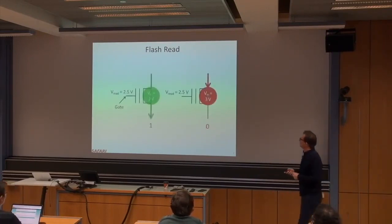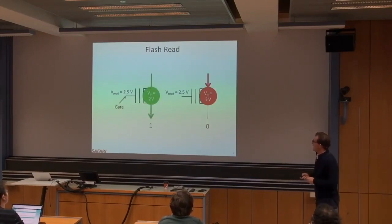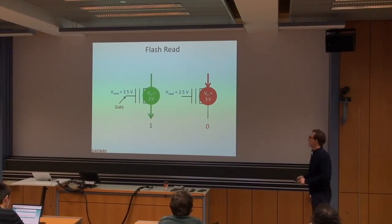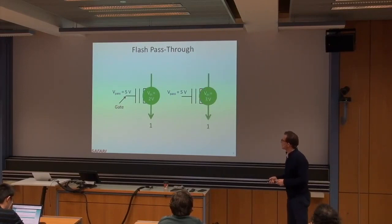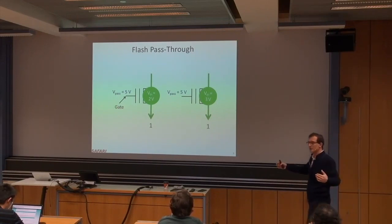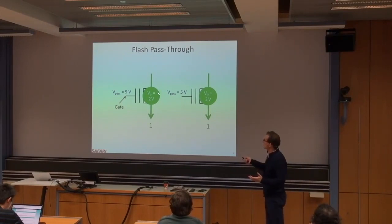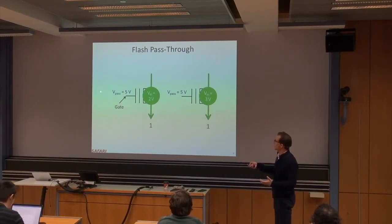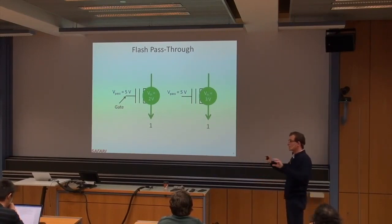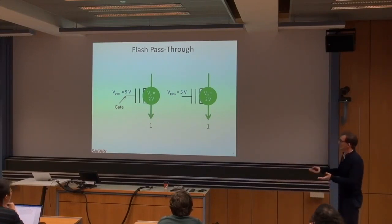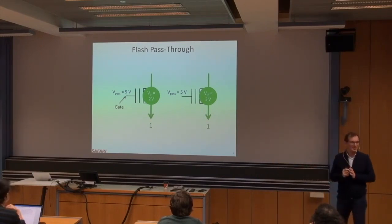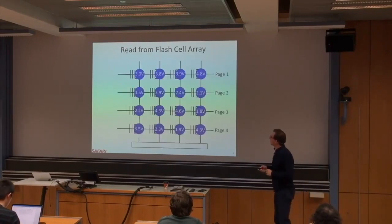For pass-through: if you don't want to read a row, you apply a very high voltage — higher than any programmed value — so that cell always turns on and passes through whatever's coming on the bit line. That's the pass-through voltage, ensuring non-selected rows don't interfere with the read.